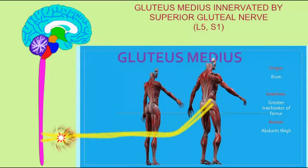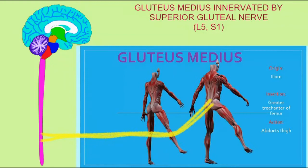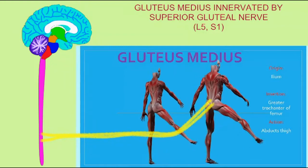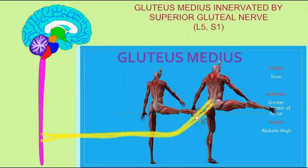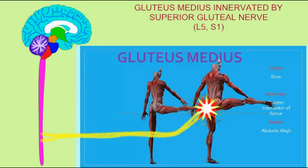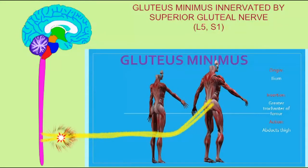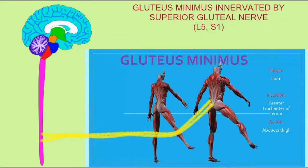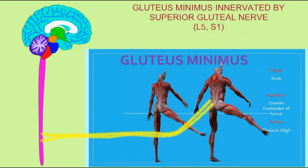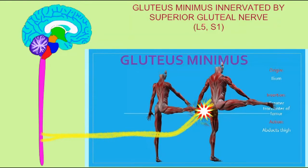The gluteus medius is innervated by the superior gluteal nerve. The gluteus minimus is innervated by the superior gluteal nerve.